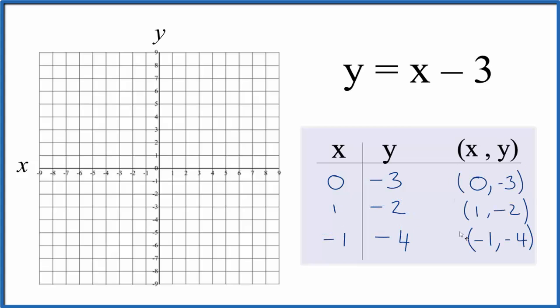So these are the points that we'll graph for the equation y equals x minus 3. Let's start with 0 minus 3. So we go to x is 0, that's right here, and y is minus 3.